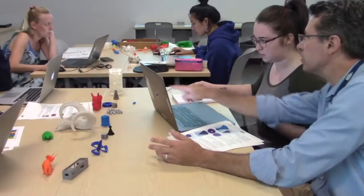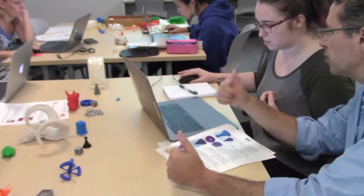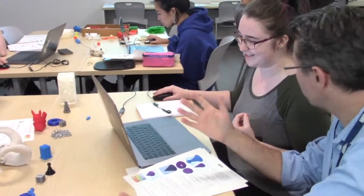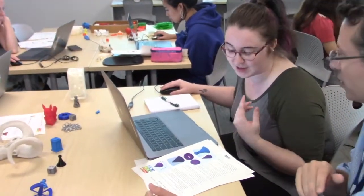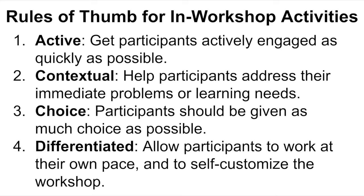Once participants have started working on their chosen hands-on activity you should try to lead this hands-on portion of the workshop as a guide on the side rather than a sage on the stage. The general rules of thumb for in-workshop activities is to make sure that they are active. Get participants actively engaged in skill development for as much time as possible.